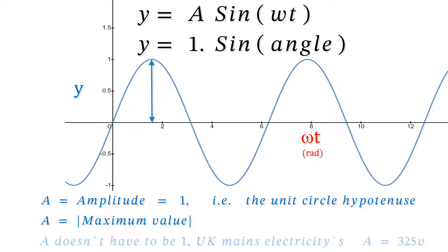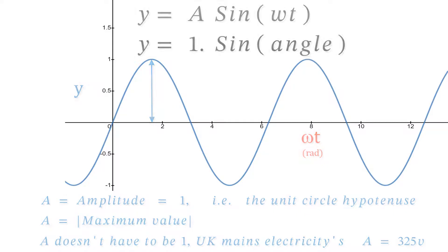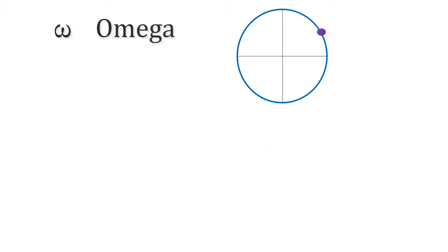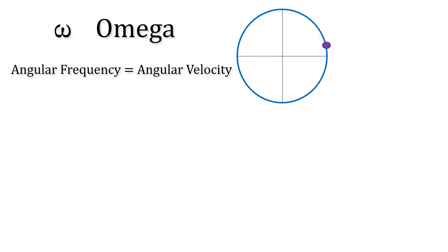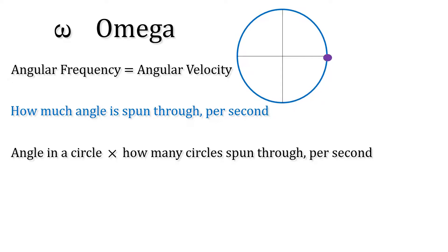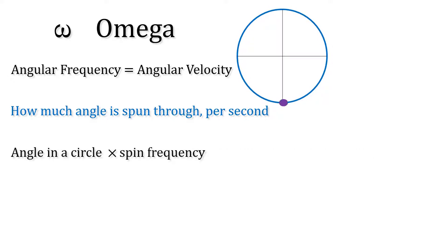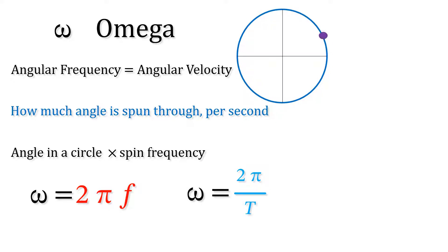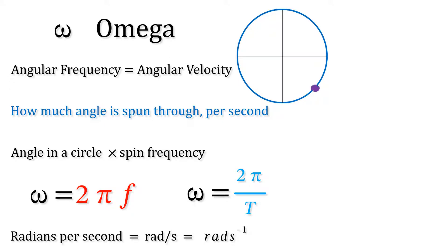The amplitude is always the maximum value that a sine function gets to away from the x-axis, but it doesn't have to equal 1. Omega is the angular frequency or angular velocity — it's how much angle is spun through per second. It's the angle in a circle times how many circles we spin through per second, so it's equal to 2 pi times f, where f is the frequency of the spin. It's also equal to 2 pi over the period, and its units are radians per second.